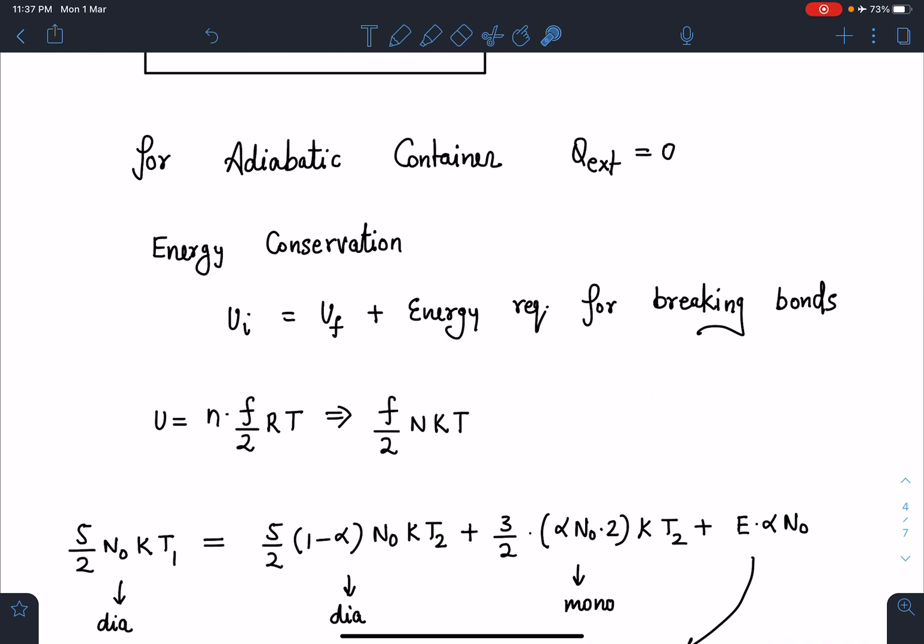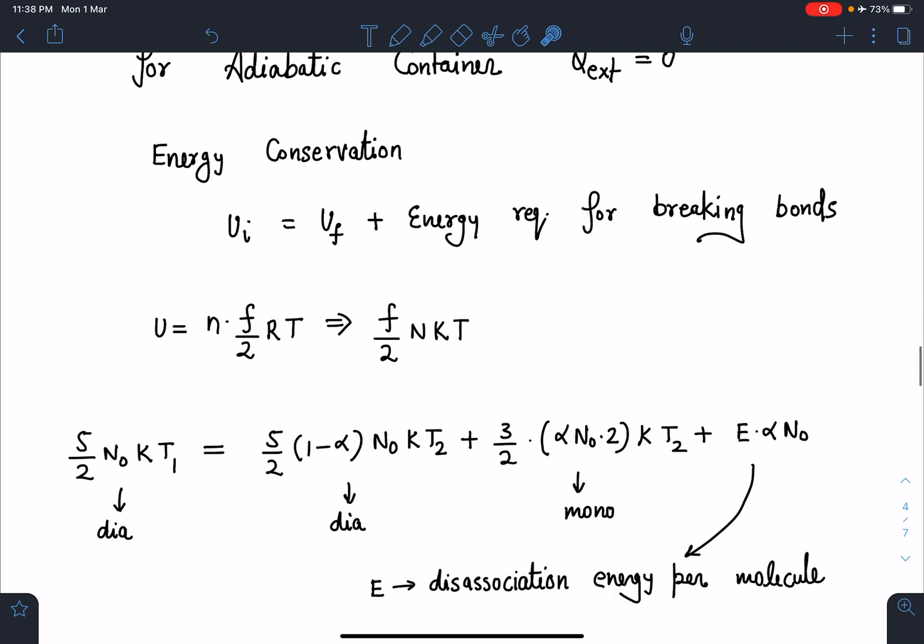Now when we apply energy conservation here, this is the internal energy - it's a diatomic gas so degrees of freedom is 5: (5/2)N₀kT₁. Similarly, (1-α)N₀ molecules are left, so (5/2)(1-α)N₀kT₂. The converted ones are 2N₀α and corresponding to these number of molecules for monatomic gas (3/2)kT₂, so degrees of freedom is 3. And the energy which is required for breaking the bonds - how many bonds we are breaking? αN₀, so that should be multiplied with E.